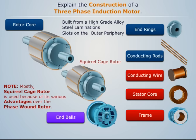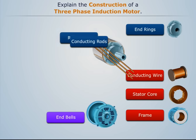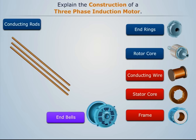Note that mostly the squirrel cage rotor is used because of its various advantages over the phase wound rotor. Conducting rods are heavy bars made of copper, aluminum, or alloys and are used as rotor winding.